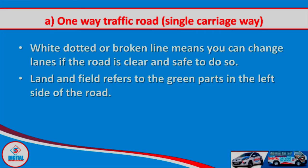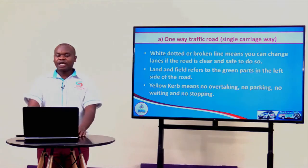When you're in a white continuous line, this means you are not supposed to change your lane or overtake someone at that particular point. A white broken or dotted line means that if it is safe to do so, you are allowed to change your lane or overtake someone. We also have the lands or the fields — these are the green parts at the edges of the model town board.